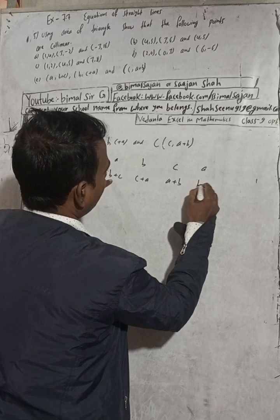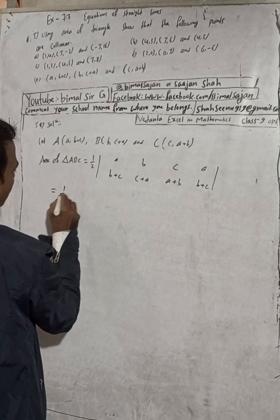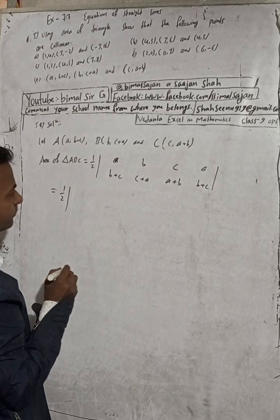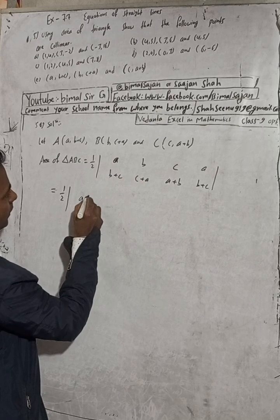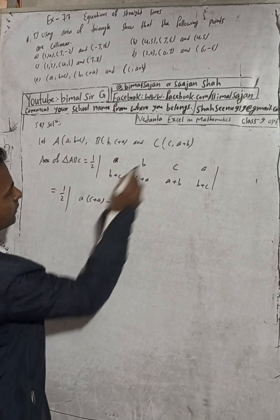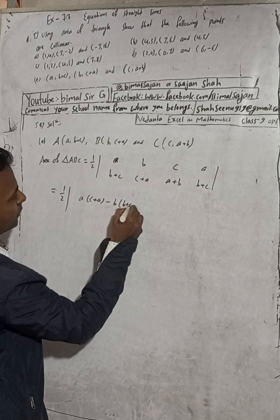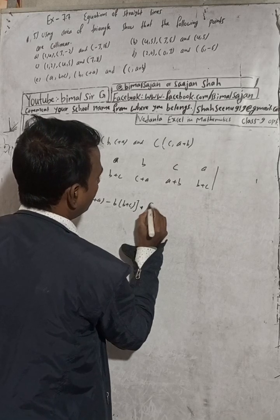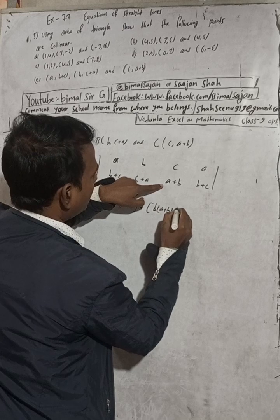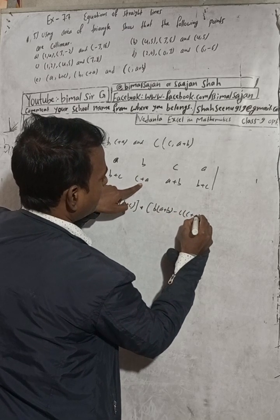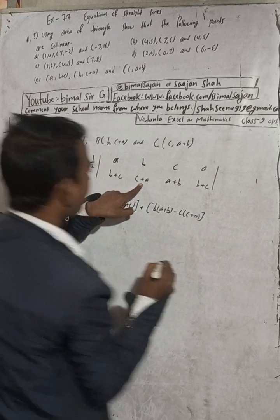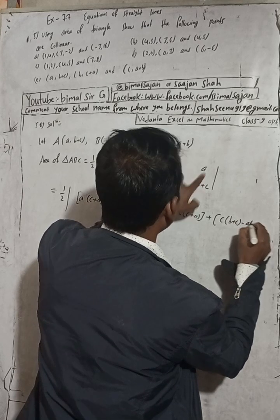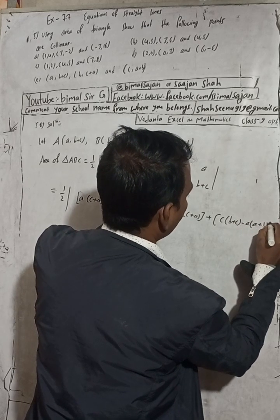Expanding: 1/2 times [a(C+A) minus b(B+C)] plus [b(A+B) minus c(C+A)] plus [c(B+C) minus a(A+B)]. This gives 1/2 times: AC + A² minus B² minus BC plus AB plus B² minus C² minus CA plus CB plus C² minus A² minus AB.